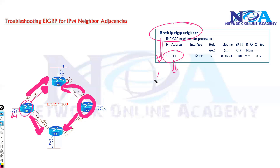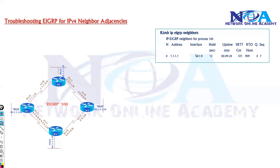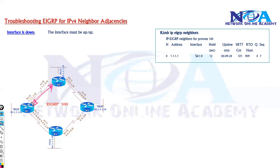The first thing we start with is the neighborship. If the neighborship is not establishing, the first step is to ensure that the interface must be up and up. In my example, I am going to verify the neighborship between router 1 and router 2, and if the neighborship is not forming, I will check whether the interface is up or not.